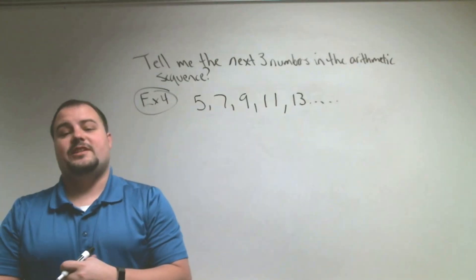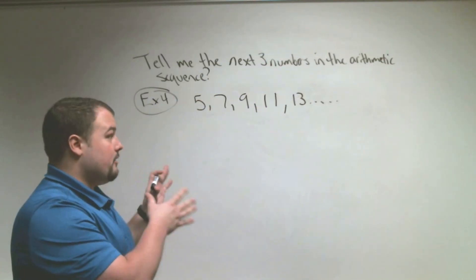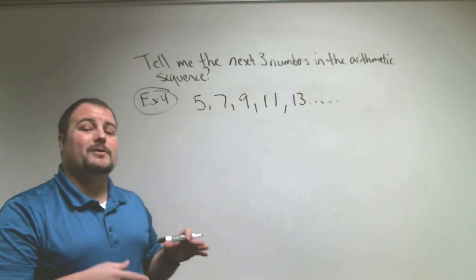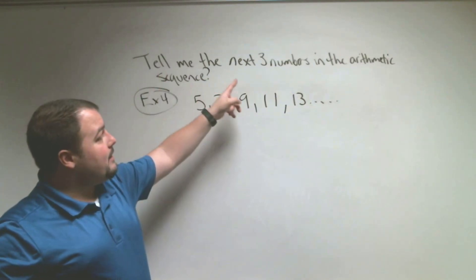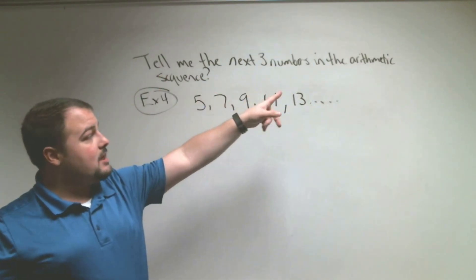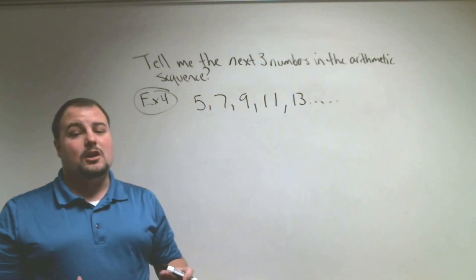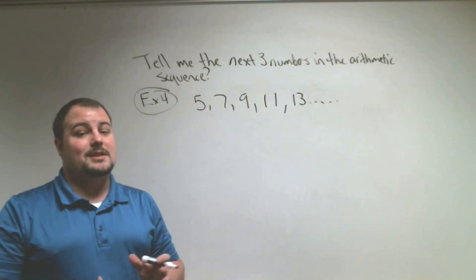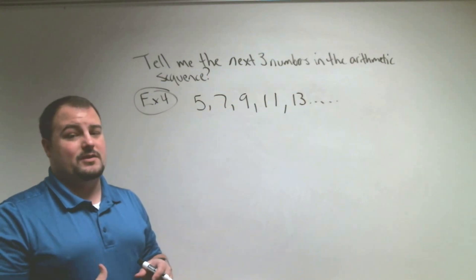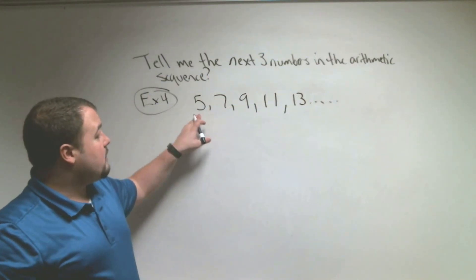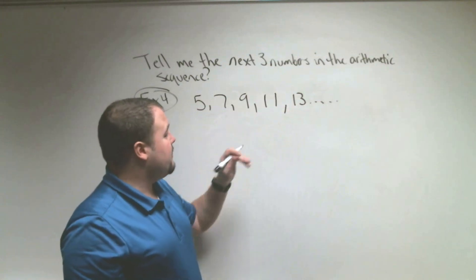In our next type of example, our job is to continue on for three more numbers. We have to tell the next three numbers in an arithmetic sequence. The directions tell us it is arithmetic; we just have to say what comes after. So looking at this, it goes 5, 7, 9, 11, 13.